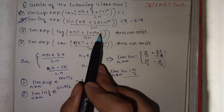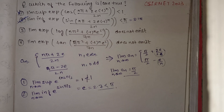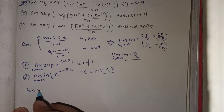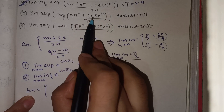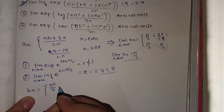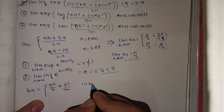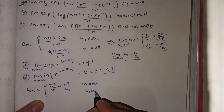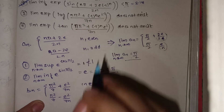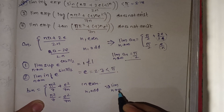Now for options 3 and 4, the inner value is the same for both. We separate the sequence b_n into even and odd terms and solve similarly. If n is even, b_n = π²/7 + e²/7, and if n is odd, b_n = π²/7 - e²/7.